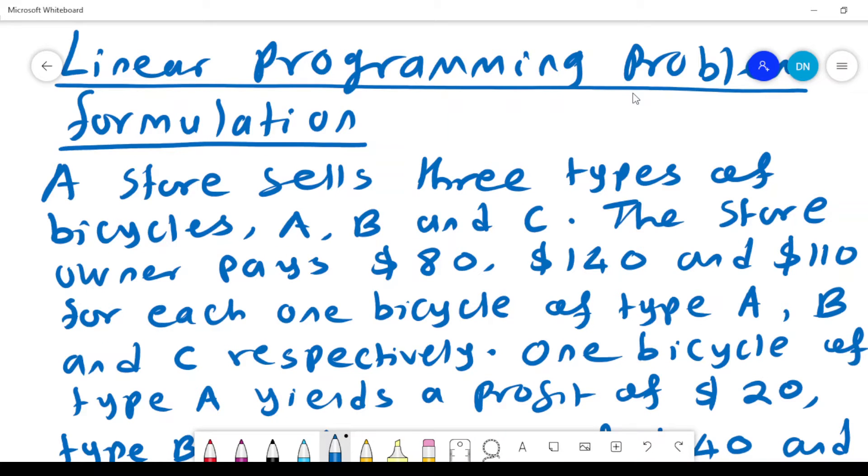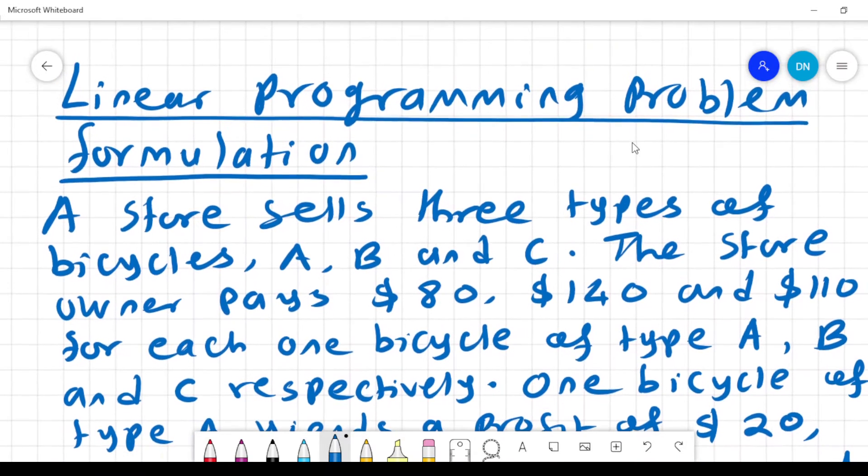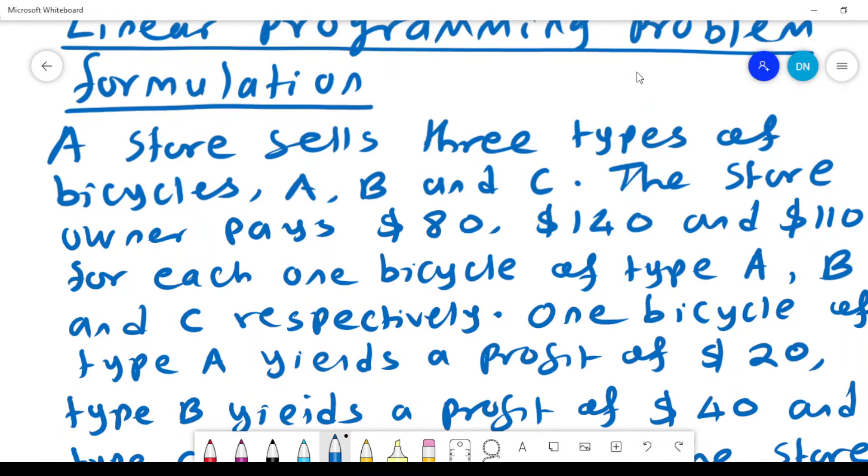We want to look at a linear programming problem formulation. A store sells three types of bicycles: type A, B, and C. The store owner is willing to pay $80, $140, and $110 for each one bicycle of type A, B, and C respectively.